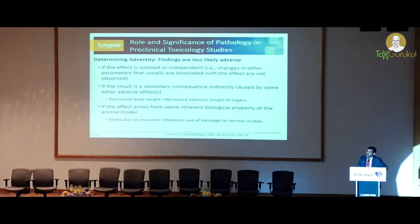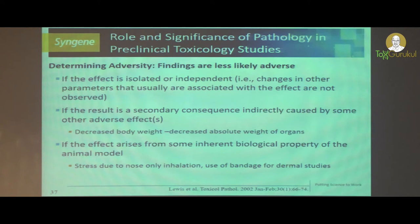If the effect is secondary to another primary effect — for example, decreased body weight will reflect in organ weight, and organ weight also decreases — here the primary finding is the decreased body weight, and the decrease in organ weights is considered secondary. These are not considered adverse findings.